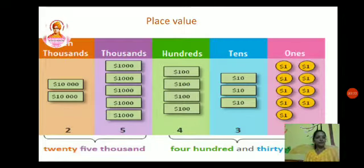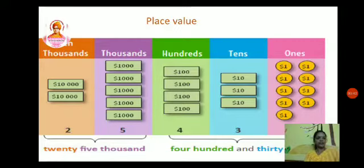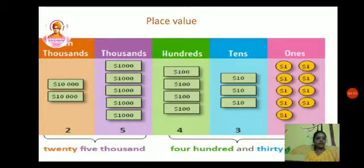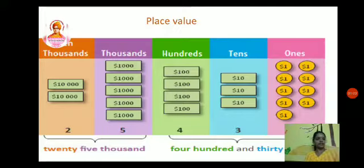Place value is very very important in subtraction too. Place value should be taken into account from the right side. The first number on your right side is called ones, then tens, then hundreds, then thousands, and ten thousands — it goes on. So from the ones only we are going to start the place value. After ones, if you have any number it is considered as tens, then hundreds, then thousands, and the last is considered as ten thousands. This is called place value. Once you know the place value then only you can go with the sums.